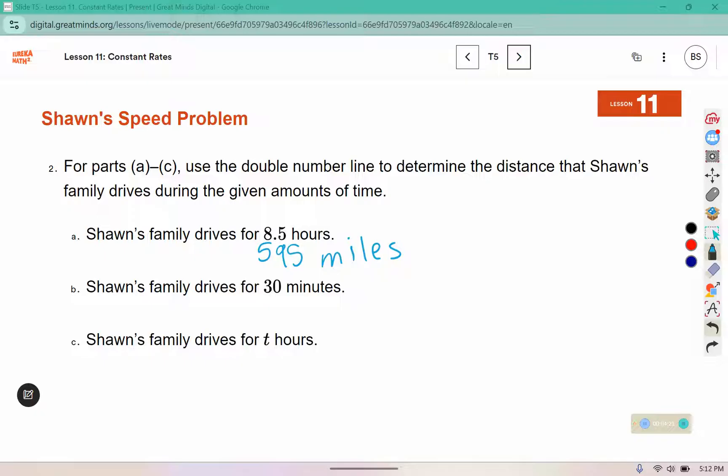How far do they go in 30 minutes? Well, 30 minutes is the same as a half an hour, and we just said that half of 70 is 35 miles. What if Shawn's family drives for T hours? Their unit rate was 70, so if we multiply the number of hours by 70, that would tell us how many miles they go. This is an expression.